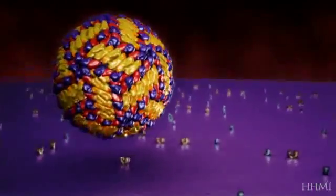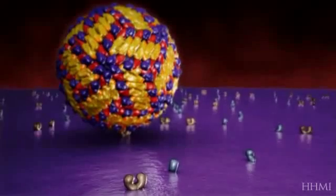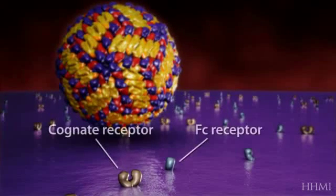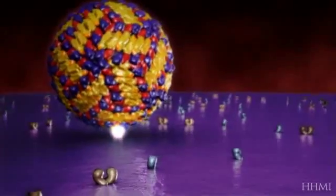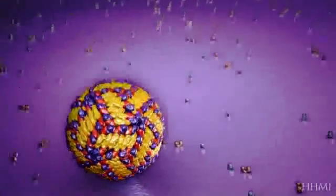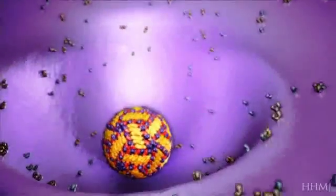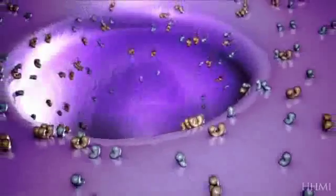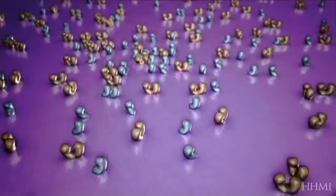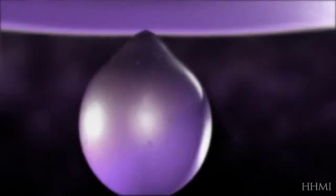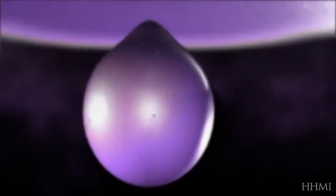And it will actually attach to it — this is called the cognate receptor — and we'll talk later about a different type of receptor called an FC receptor. And what will happen is that there'll be an interaction, and through what we call receptor-mediated endocytosis, the virion will enter into this endosome, which is a membranous vesicle.